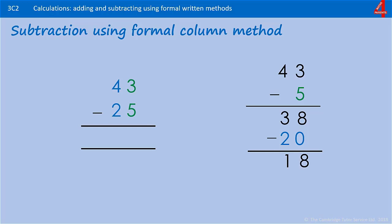With the formal column method, we start with the ones column and we say 3 take away 5. And straight away you can see we can't do that because 3 is smaller than 5. So we need to take 1 from the next column.